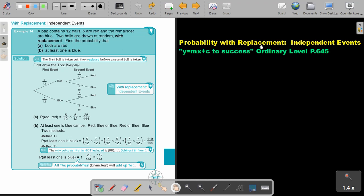Probability with replacement: Independent events. You will find this on page 645 in the Namibia Ordinary Level Mathematics Textbook, Y equals MX plus C to success. With replacement, independent events.